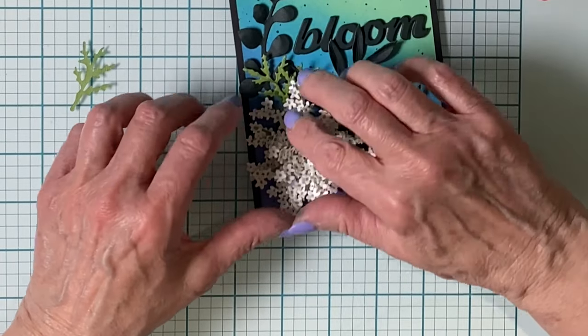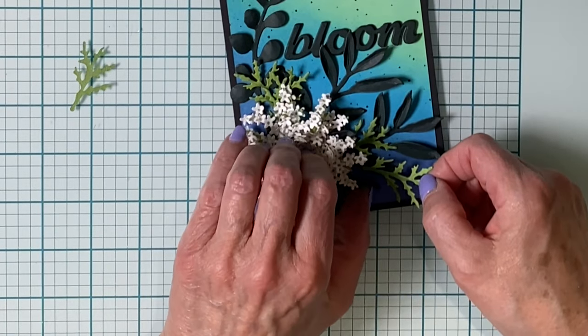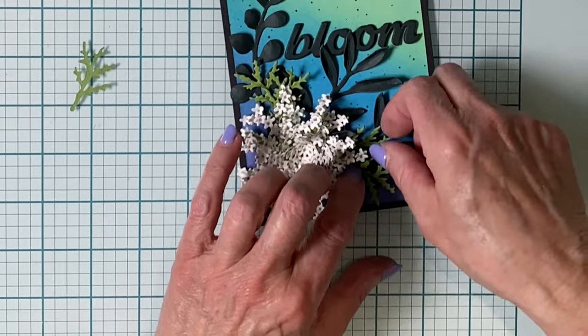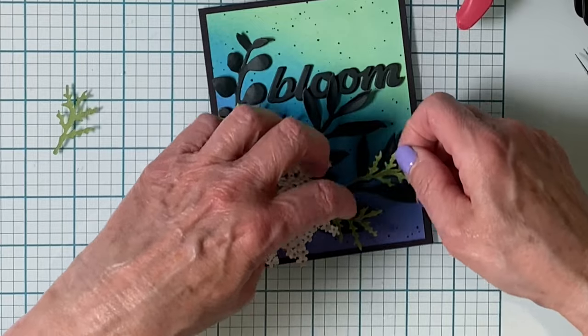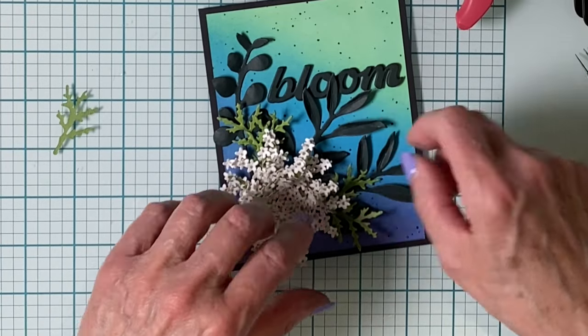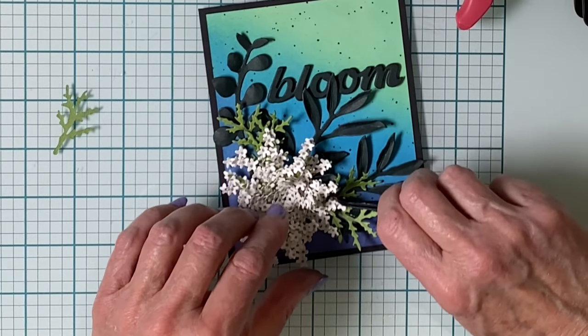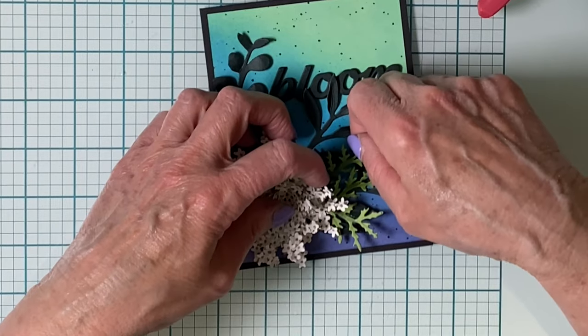I like to do my placement in groupings. So at the top of the flower, I'll have two leaves slightly overlapping one another. And then on the bottom right-hand side of the flower, I'll take three leaves and overlap those.